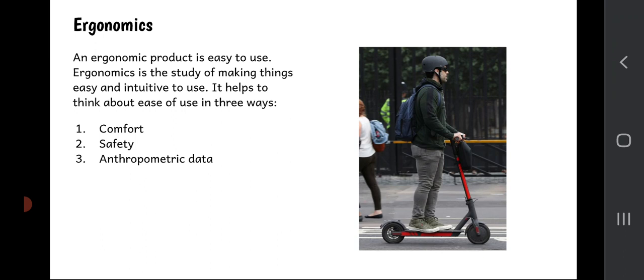If something was not easy to use, if it was not ergonomic, then we would be dissatisfied using it. It would be confusing, it would be complicated, it would leave us feeling bad about it. When we're thinking about ergonomics, we think about ease of use in three different ways. We think about its comfort, safety, and anthropometric data. We're going to explain what that means in a minute, but for now pause the video, copy that slide into your notes.